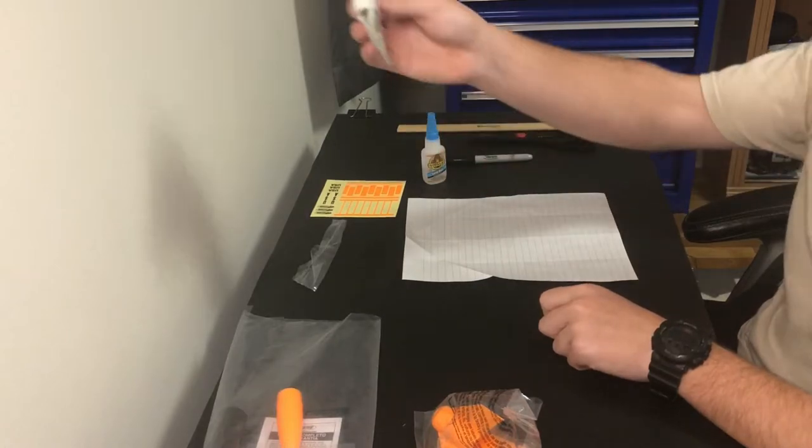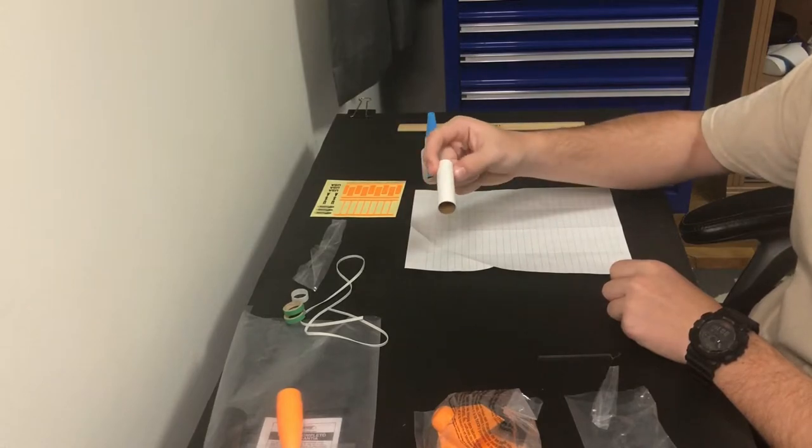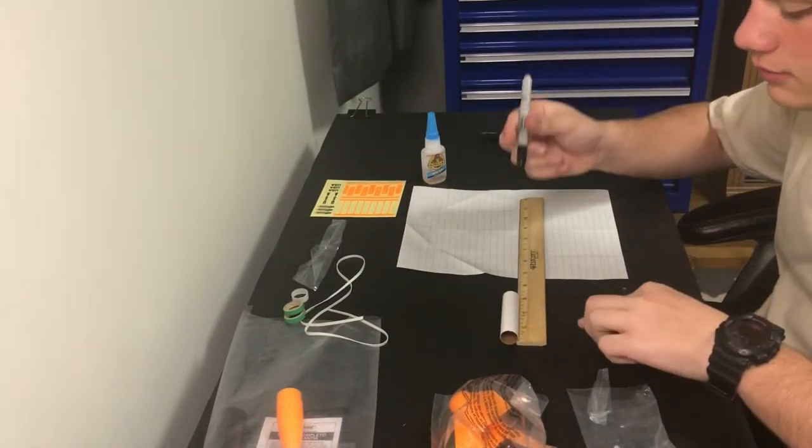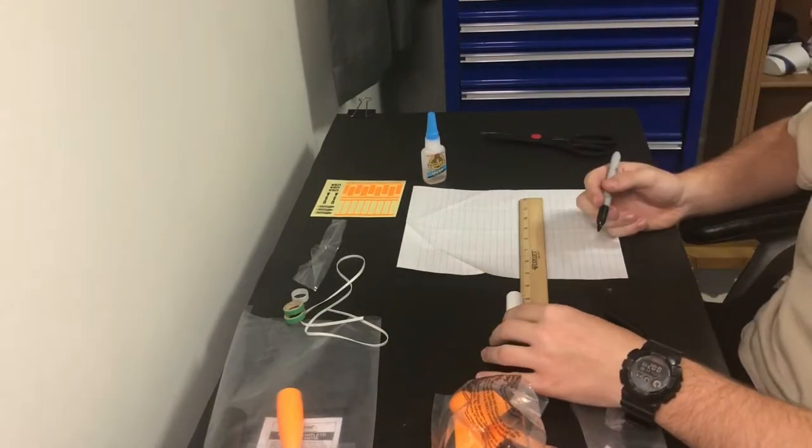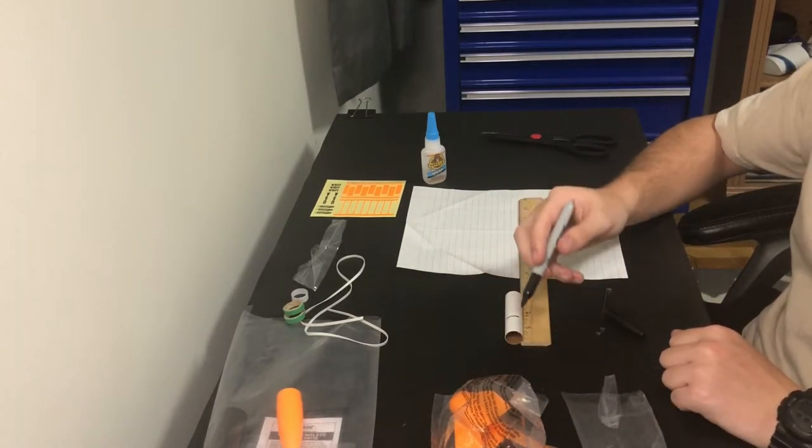First step, we're going to be building our engine mount. Open this up. You're going to need this tube. Draw a line at one inch and then you're also going to draw a line at two and a quarter inches.